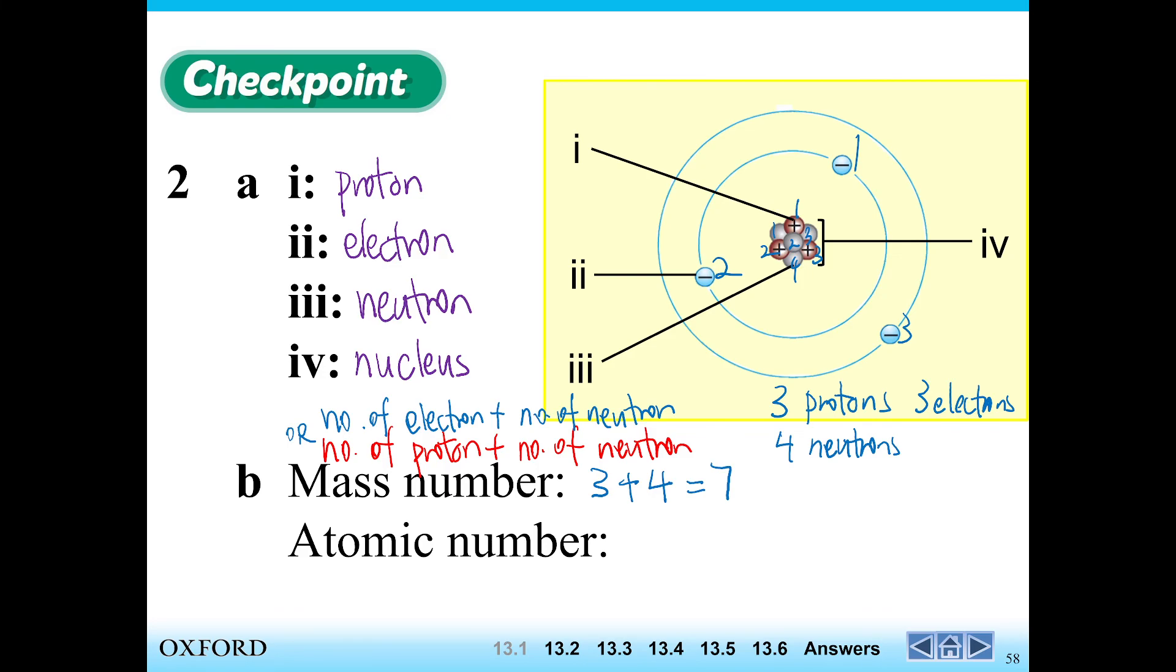And what's the atomic number? The atomic number is simply the number of protons or the number of electrons. So for this, this would be 3. Okay? So that's a wrap for this. I'll see you in the next one.